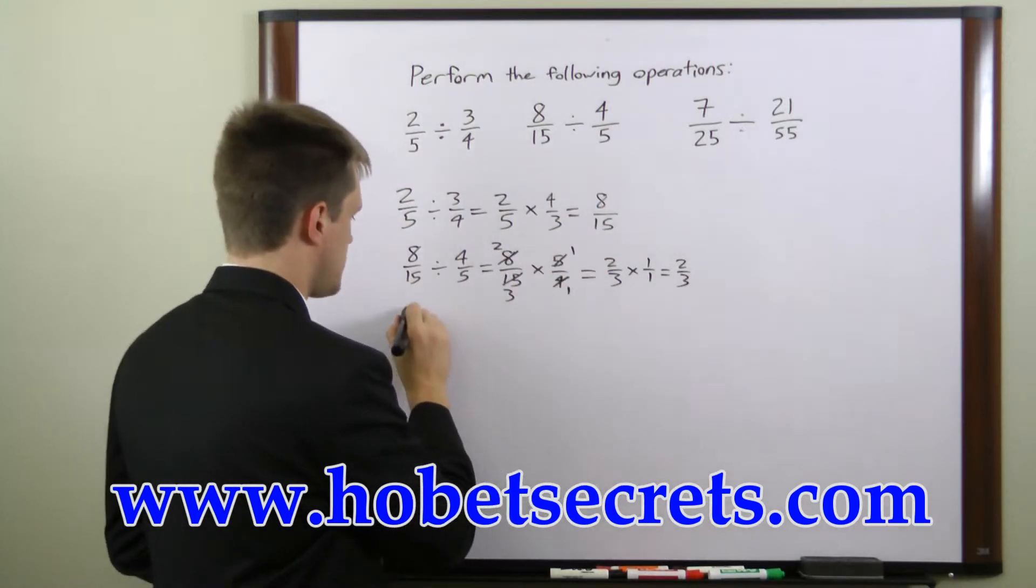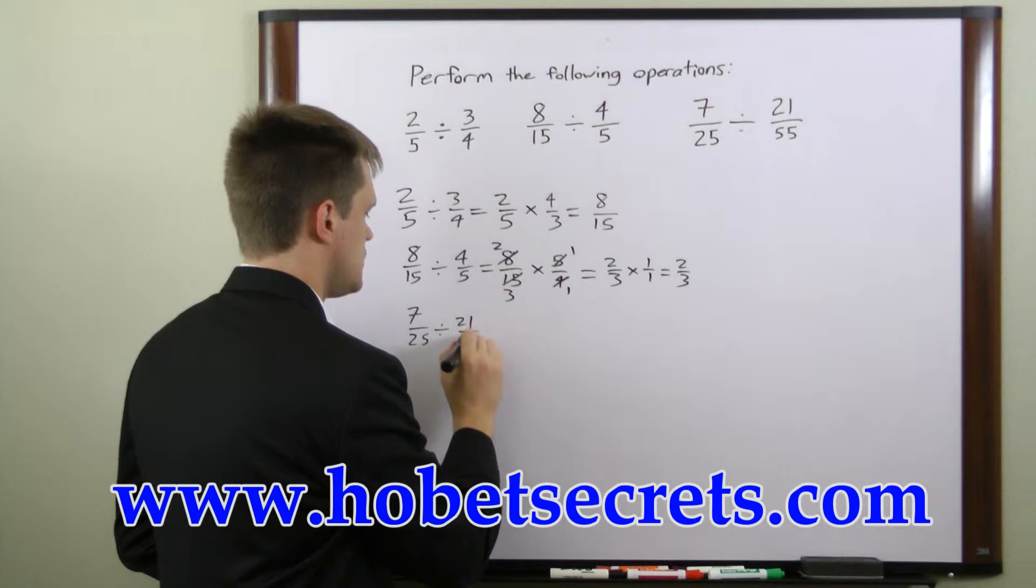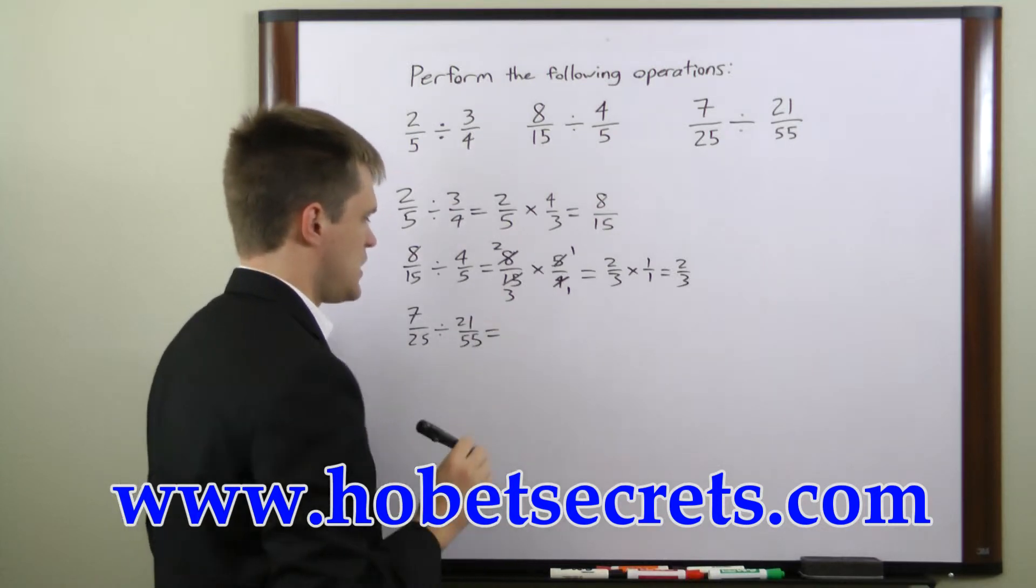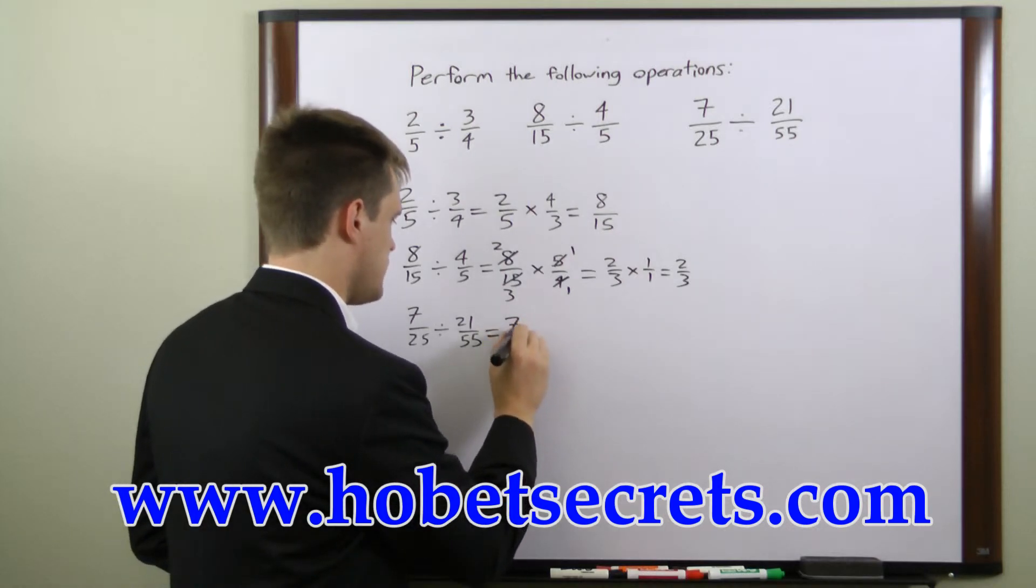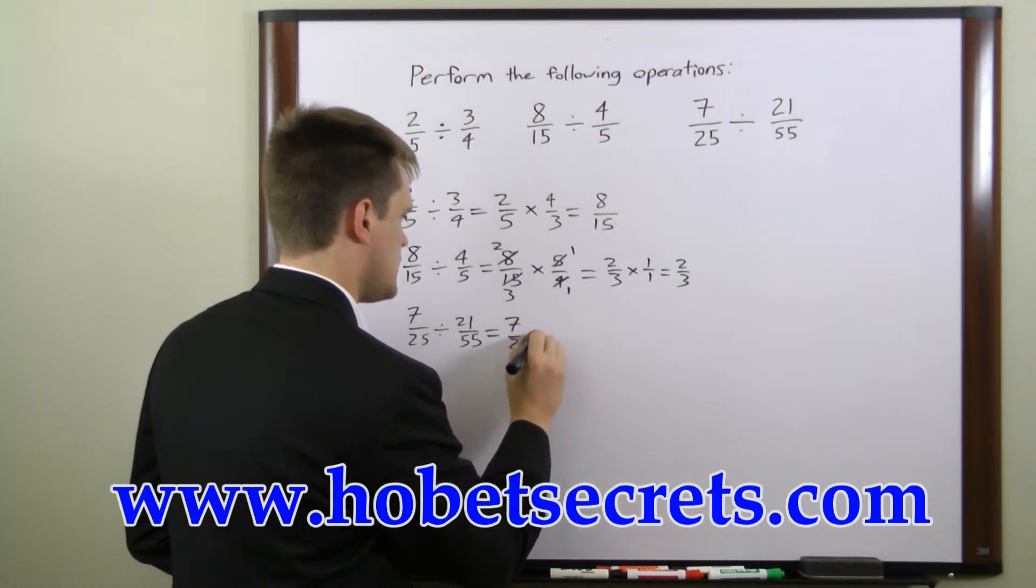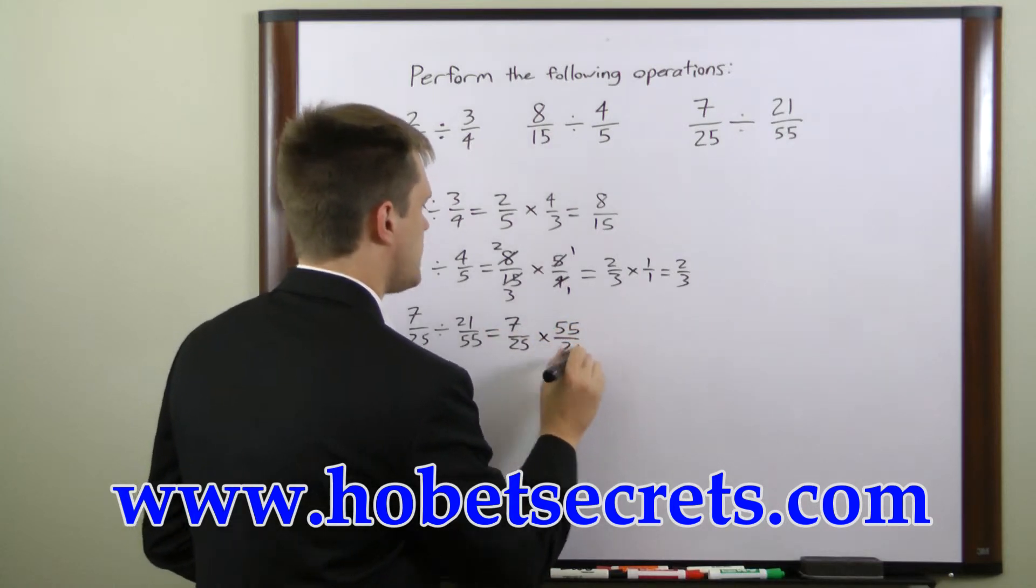This last problem here, seven over twenty-five divided by twenty-one over fifty-five can be done the same way. We'll rewrite this as seven over twenty-five times fifty-five over twenty-one.